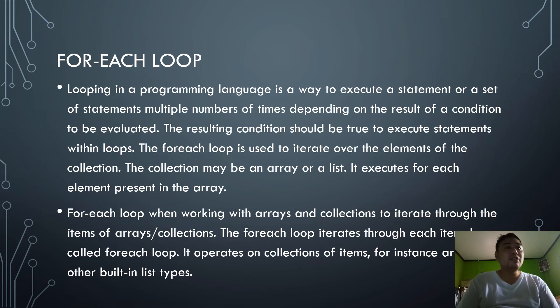For each loop: this is a looping in a programming language that is a way to execute a statement or a set of statements multiple number of times depending on the result of the conditions to be evaluated. The resulting condition should be true to execute statements within loops. The for each loop is used to iterate over the statements of the collection. The collection may be an array or a list. It executes for each element present in the array. For each loop when working with arrays and collections to iterate through the items of array or collections, the for each loop iterates through each item. It operates on a collection of items, for instance, built-in list types.